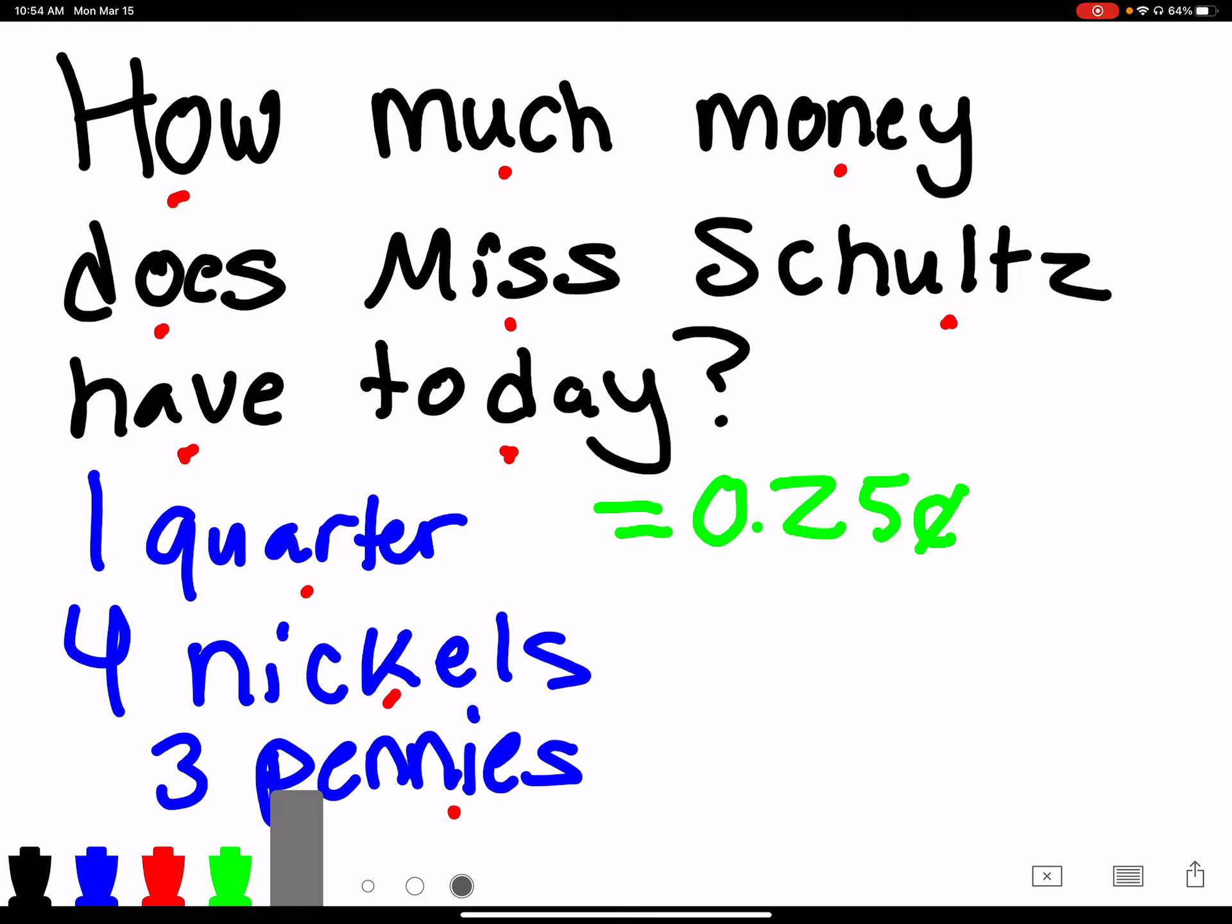And I have four nickels. How much is one nickel worth? Shout it out. One nickel is worth five cents, and we have four of them. So we have to add five cents four times. We know five plus five is 10, and then we'll have another set of 10. So 10 plus 10 is 20.